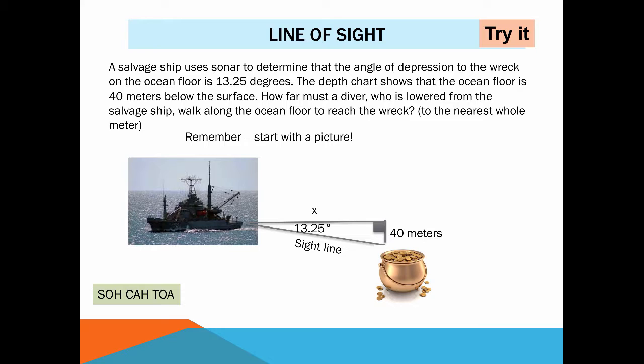Okay so how am I going to do that? Well I've got to come up with an equation to solve and we're in trigonometry so this is probably going to involve a trigonometric function and I look at what I have. I have an angle 13.25 degrees and I know the side opposite that angle is 40 meters and I'm trying to find the side that's adjacent to that angle.